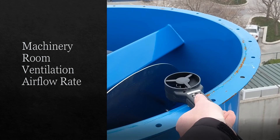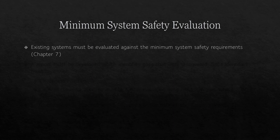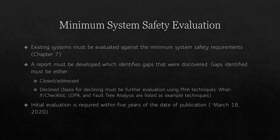Similarly, emergency ventilation need not be activated until 1000 PPM — IIAR Standard 2 requires ventilation to be activated at 150 PPM. The machinery room ventilation emergency airflow rate is established by the requirement at the time the machinery room was built or modified; 30 air changes per hour is not required in Standard 9. The biggest implication of Standard 9 is the requirement to perform a minimum system safety evaluation every five years, with the initial evaluation due in March 2025.